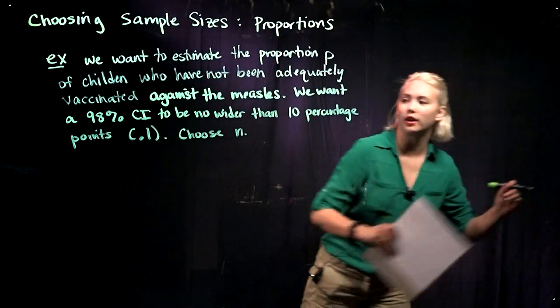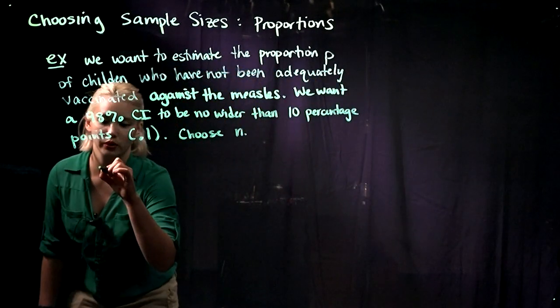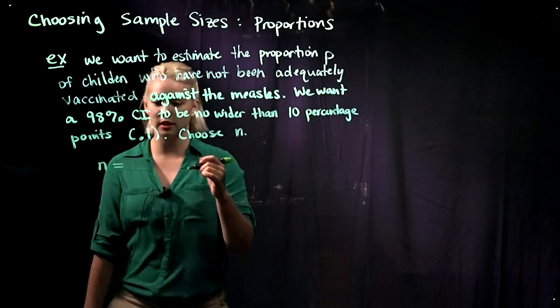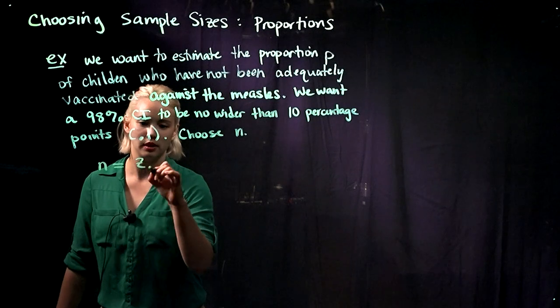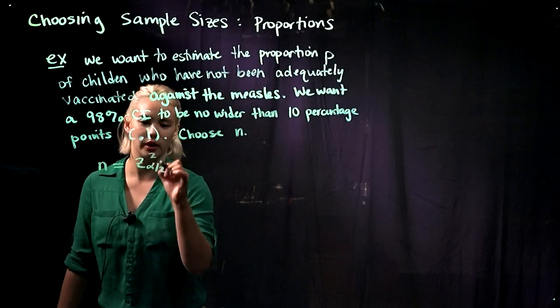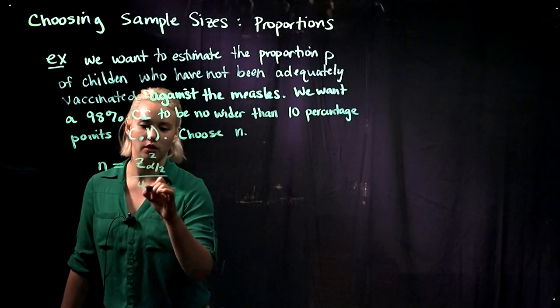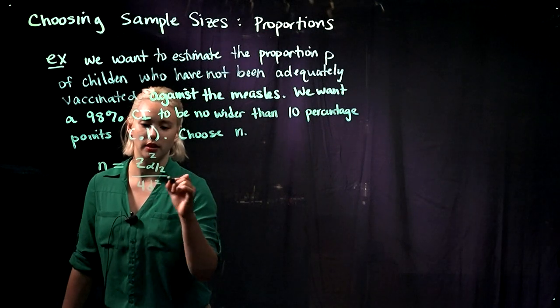We can start off with our equation that we just proved. We know that n is going to be equal to z alpha over 2 squared divided by 4D squared.